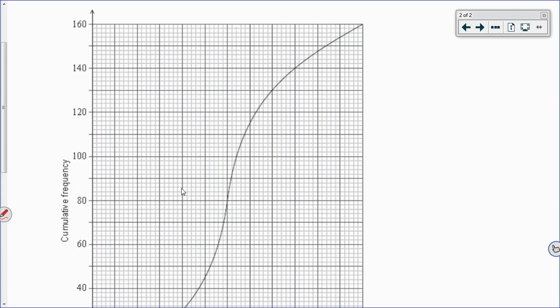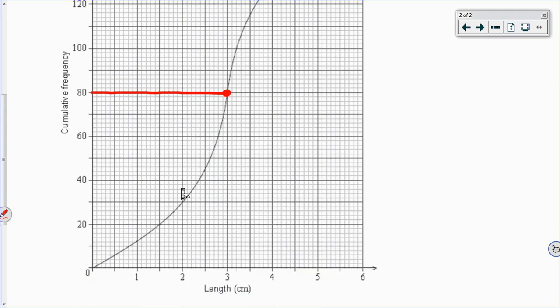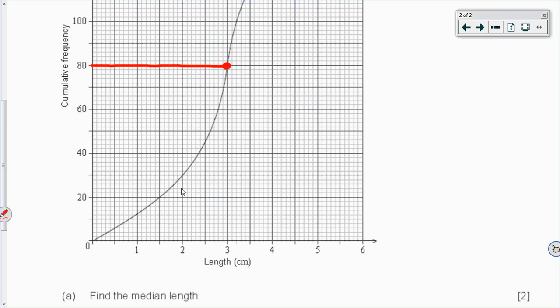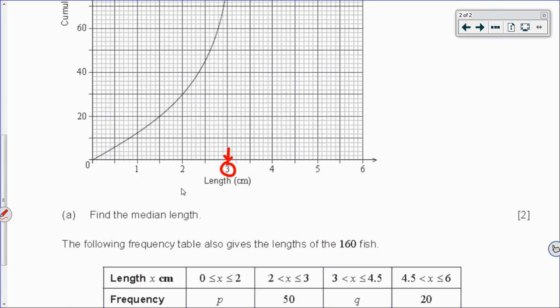So we're going to go to find 80 on our y-axis. And we need to figure out what length corresponds with that circle right there. And this is the kind of work that you would want to show for a cumulative frequency graph question, either a circle or a line like this. And you can see that it's lining up directly above the 3. So the median length of a fish in this data set is 3 centimeters. That's worth 2 points.